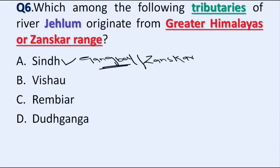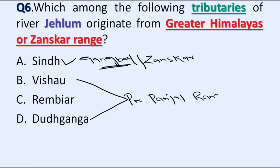Sources of the other three rivers — Vesho, Rambir, and Doodh Ganga — lie on the Pirpanjal range. All four of these are tributaries of River Jhelum.